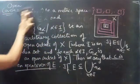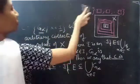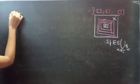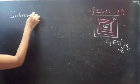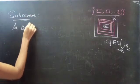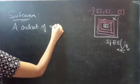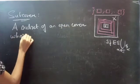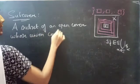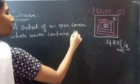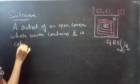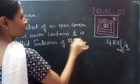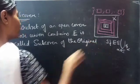Now coming to the definition of sub-cover. A subset of an open cover whose union contains E is called a sub-cover of the original open cover.